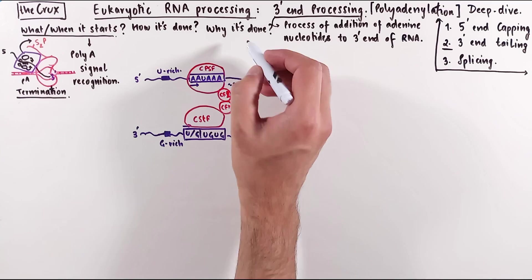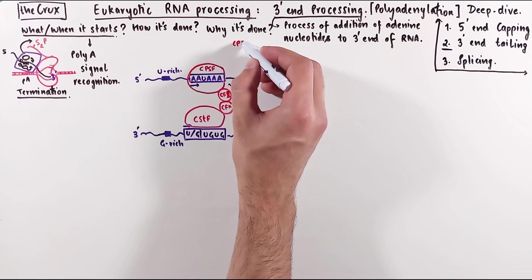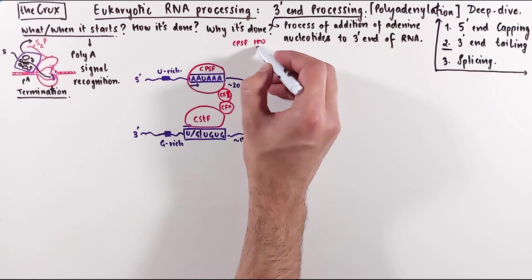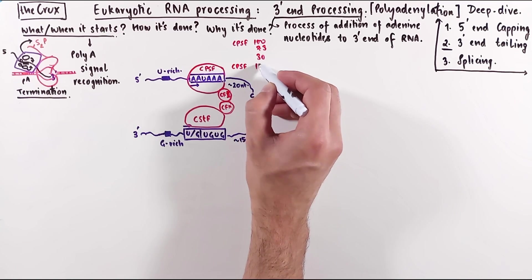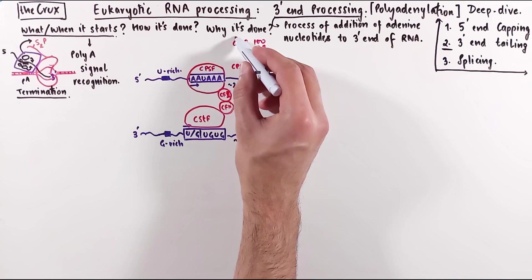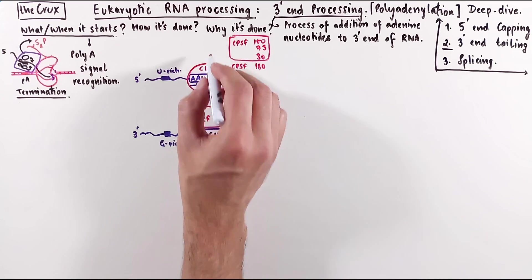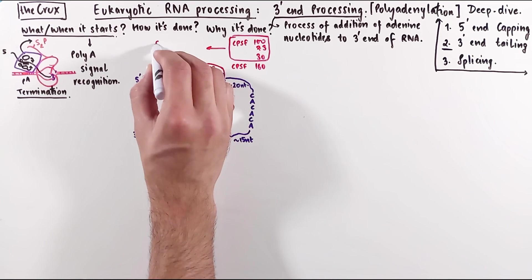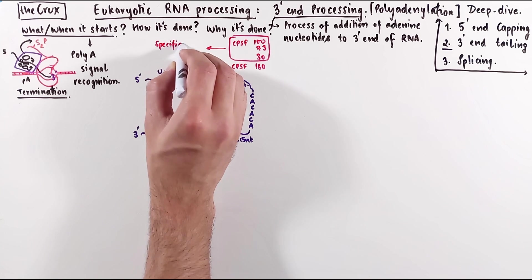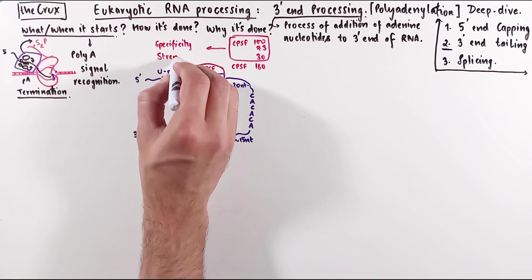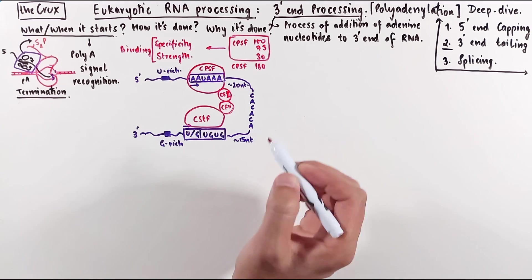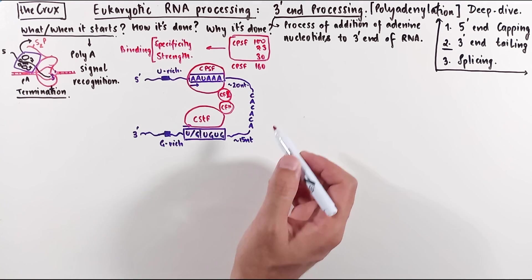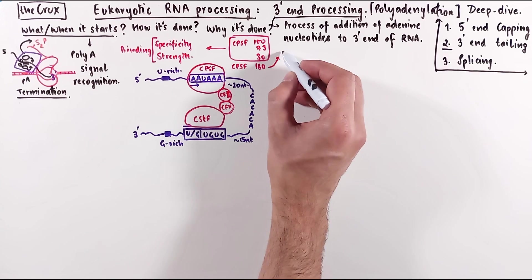Now, if we take a closer look at CPSF, it is actually a multi-subunit protein, which has subunits 100, 73, 30, and the biggest one is called CPSF-160. These numbers are just molecular weights on the proteins in kilodaltons. The first three of these units help in the strength and specificity of CPSF protein in general, and they're the ones that recognize the polyA sequence on the RNA. So essentially they have a binding function.